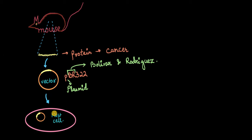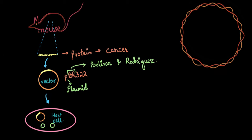pBR322 is a vector designed from bacterial plasmids. These plasmids naturally occur within bacterial cells — they are circular, double-stranded, and code for a few genes. They are extracted, genetically modified, and made into perfect vectors. Since pBR322 is made from plasmids, it also looks like one: circular and double-stranded.